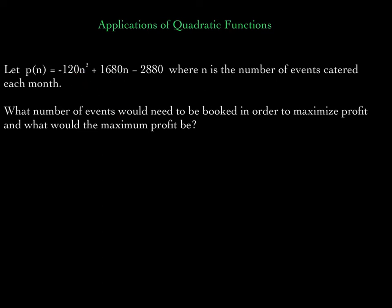Here comes the question: what number of events would need to be booked in order to maximize profit? And what would the maximum profit be? The function P stands for a profit function. So P of n is the profit this function is generating, but the variable n represents how many events are booked.